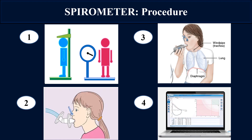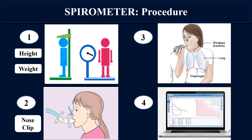To understand the procedure for spirometry, it is divided into four steps. In the first step, the patient's age is asked, and height and weight are measured. In the second step, a nose clip is applied so that the patient does not inhale or exhale through the nose; inhalation and exhalation take place only through the mouth.